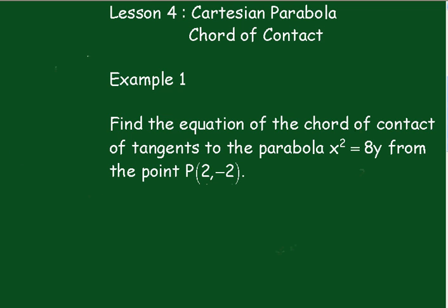We'll start off with the equation of the chord of contact, which is xx₀ equals 2a into y plus y₀, which as you notice is identical with the equation of tangents in Cartesian form except for the x₀ and y₀. Now here we've got x squared equals 8y, so we know 4a must equal 8, so a equals 2.